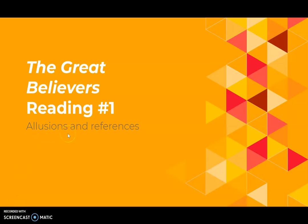Hi everyone, today we're talking about information from our first reading on The Great Believers. We're going to split this up into three videos, just so it's a little shorter, a little less overwhelming, and we can stay on one topic at a time. In this video, we're going to be talking about allusions and references that come up in this first section of our reading, in the first roughly 100 pages.